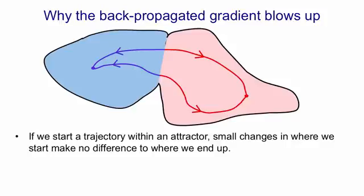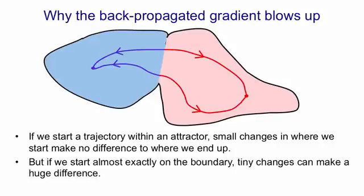If, however, we start very close to the boundary between the two attractors, then a tiny difference in where we start that's the other side of the watershed makes a huge difference to where we end up. That's the exploding gradients problem. And so whenever you're trying to use a recurrent neural network to learn attractors like this, you're bound to get vanishing or exploding gradients.